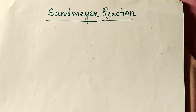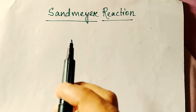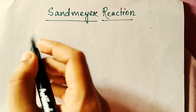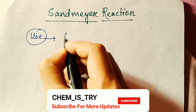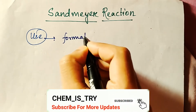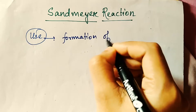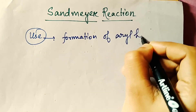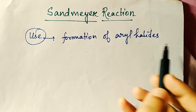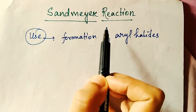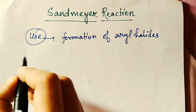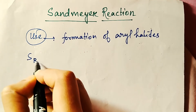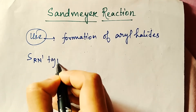In this video we are going to discuss the Sandmeyer reaction. The most important use of this reaction is the formation of aryl halides. When you want to form aryl halides, you can use this Sandmeyer reaction process. It is actually an SRN1 type reaction.